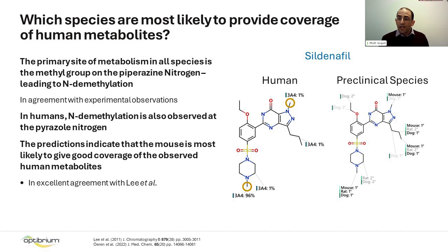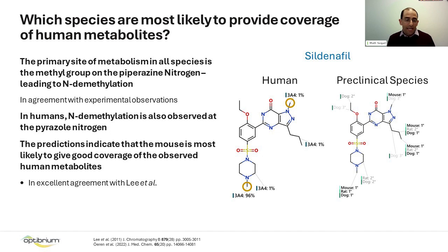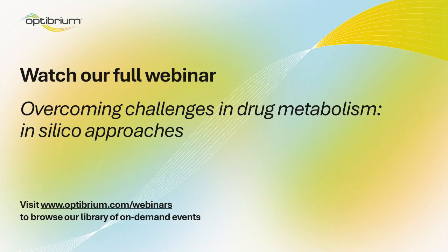Summarizing the results we just saw, the predominant sites are identified here by the orange circle. That is in excellent agreement with the observed, experimentally observed metabolism in mouse, which is published by Lee et al. — confirming that the prediction is correct.